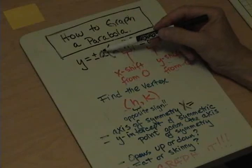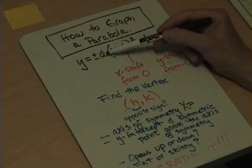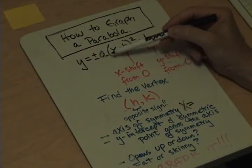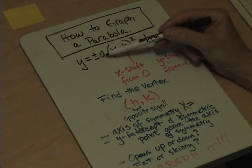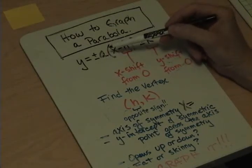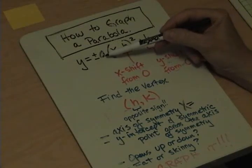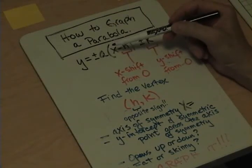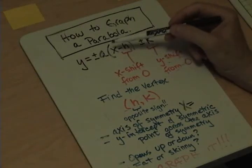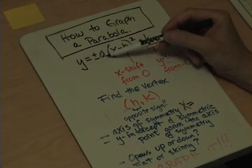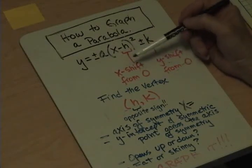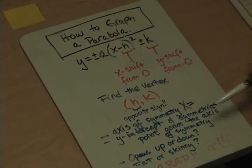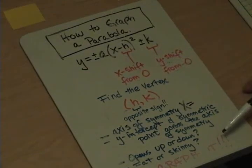Don't be confused about the value of a. If a is a number between 0 and 1 — meaning it's less than 1 and more than 0 — the parabola is fat. If the number is greater than 1, like 2, 3, 25, or 127, then the parabola gets skinnier and skinnier the larger the number is. The negative and positive sign means whether the parabola opens up or down. So once you've determined all of that, the next step is to graph it.